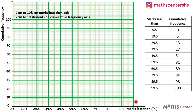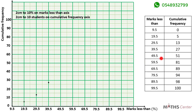We have the graph sheet here. The marks less than are on the horizontal axis and the cumulative frequencies are on the vertical axis. The scale I'm using is 2 centimeters to 10 marks on the marks less than axis and 2 centimeters to 10 students on the cumulative frequency axis. We are going to plot the points: (9.5, 0), (19.5, 5), (29.5, 13), (39.5, 27), (49.5, 51), (59.5, 81).